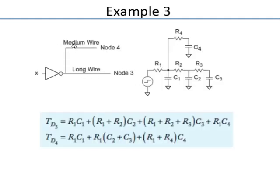Here is another example with two wires, each modeled as 2 segments. The inverter is modeled as an ideal voltage source with a resistor in series. The delay from the input to any node is calculated using the Elmore delay formula for hand calculation.